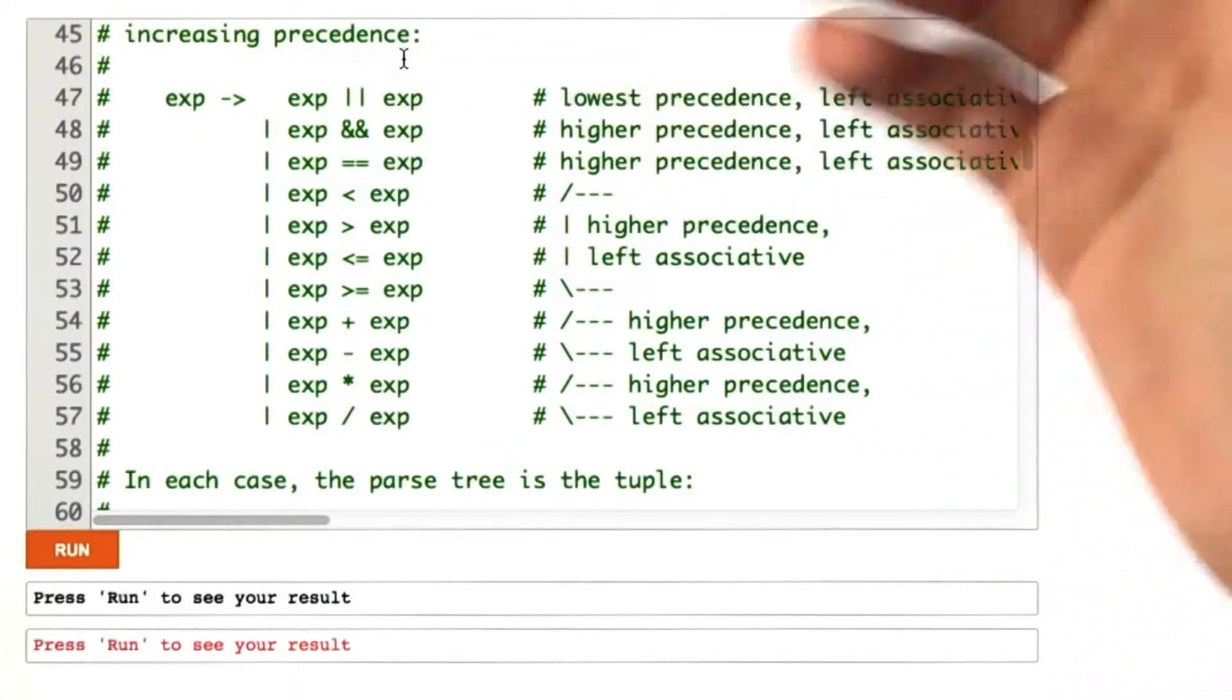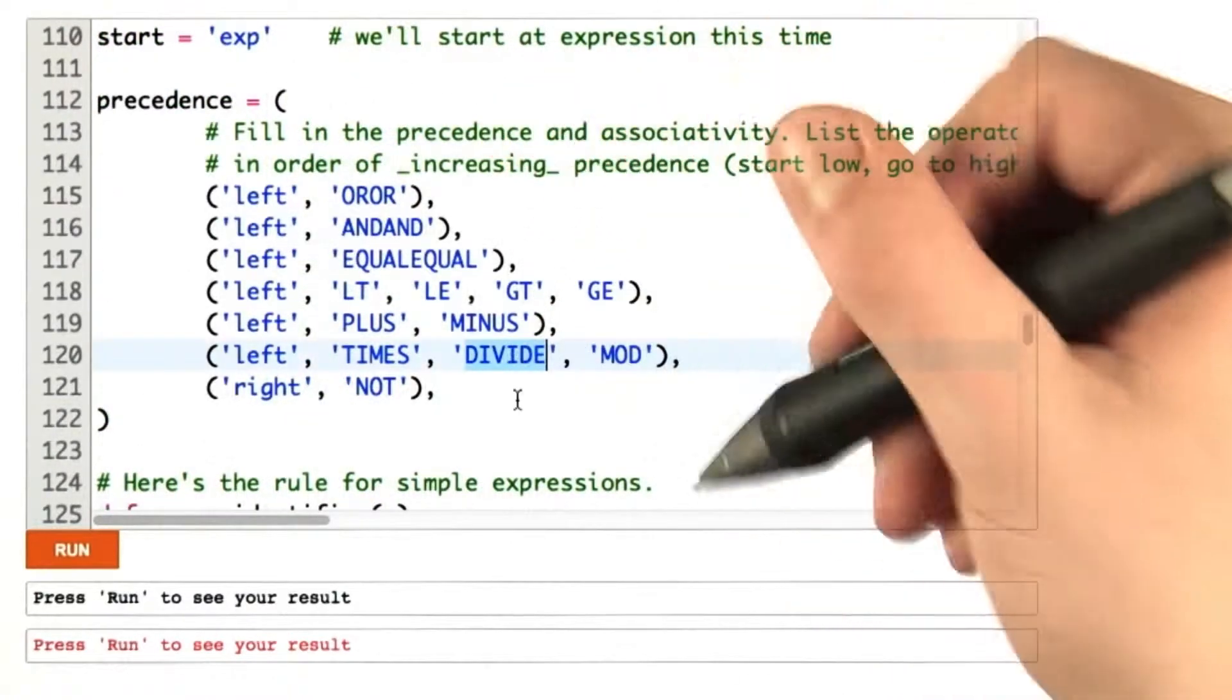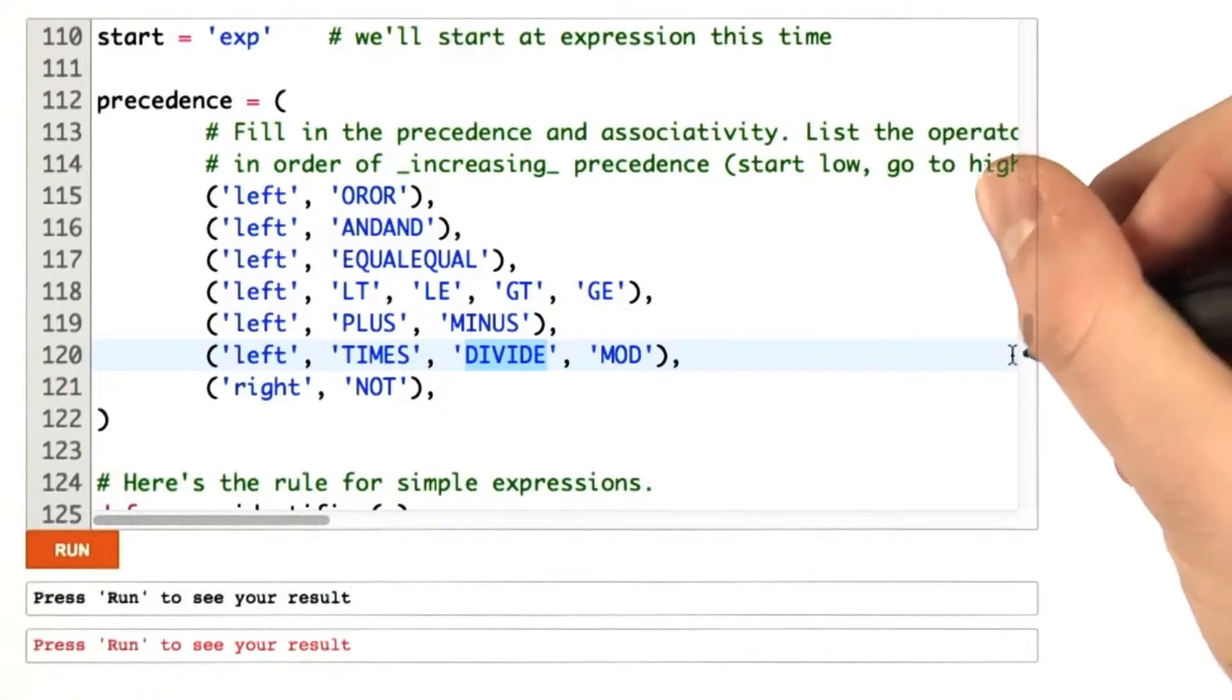And this is simply taken almost exactly right from the comment given in the problem, where OR is listed at the lowest precedence, and we go all the way up to division, right here. I've also added NOT just to make it work.